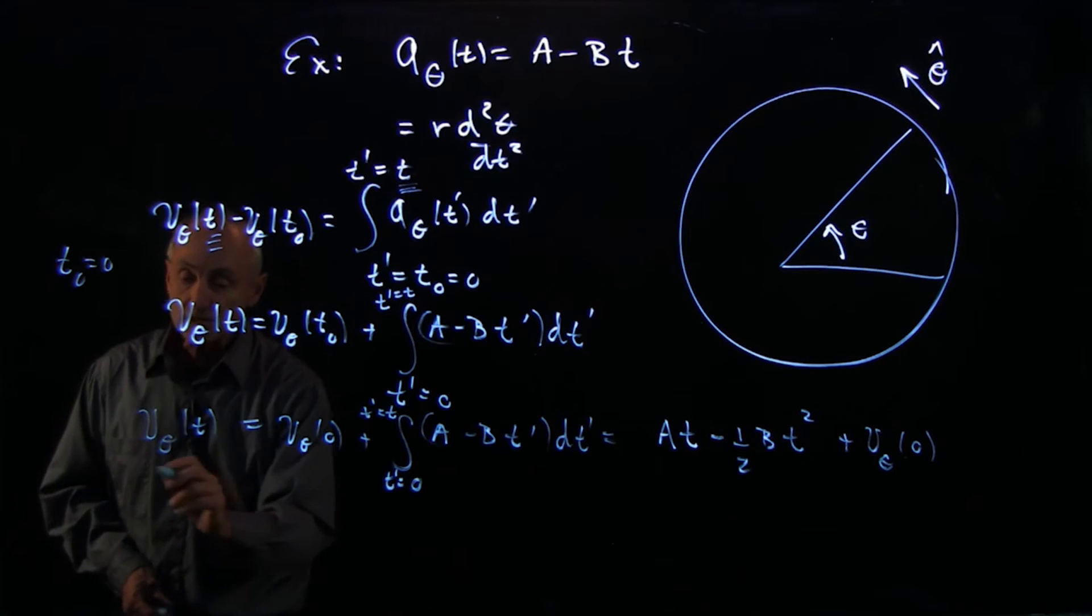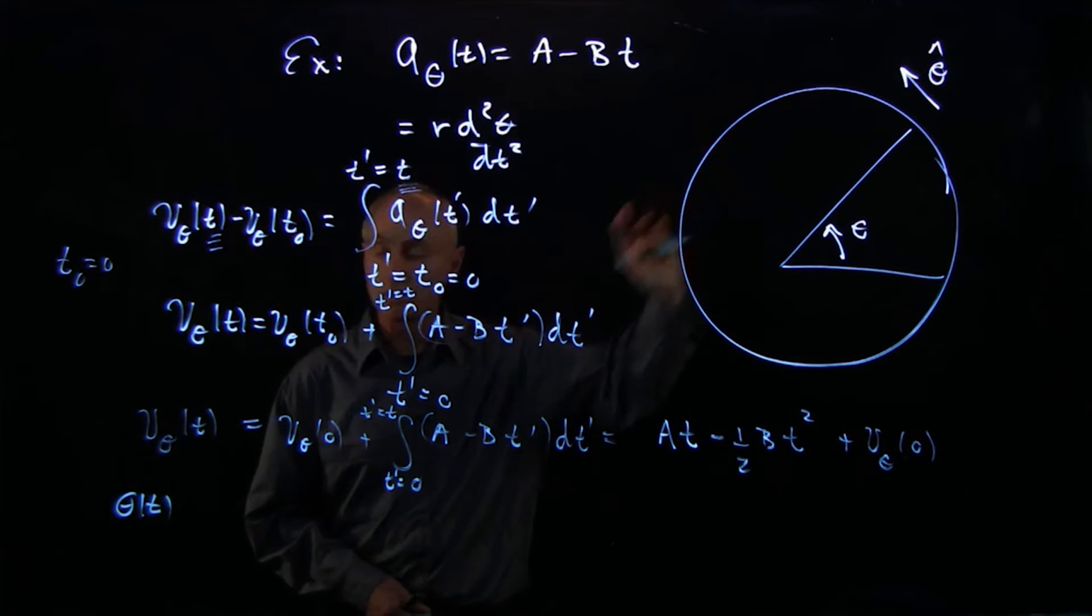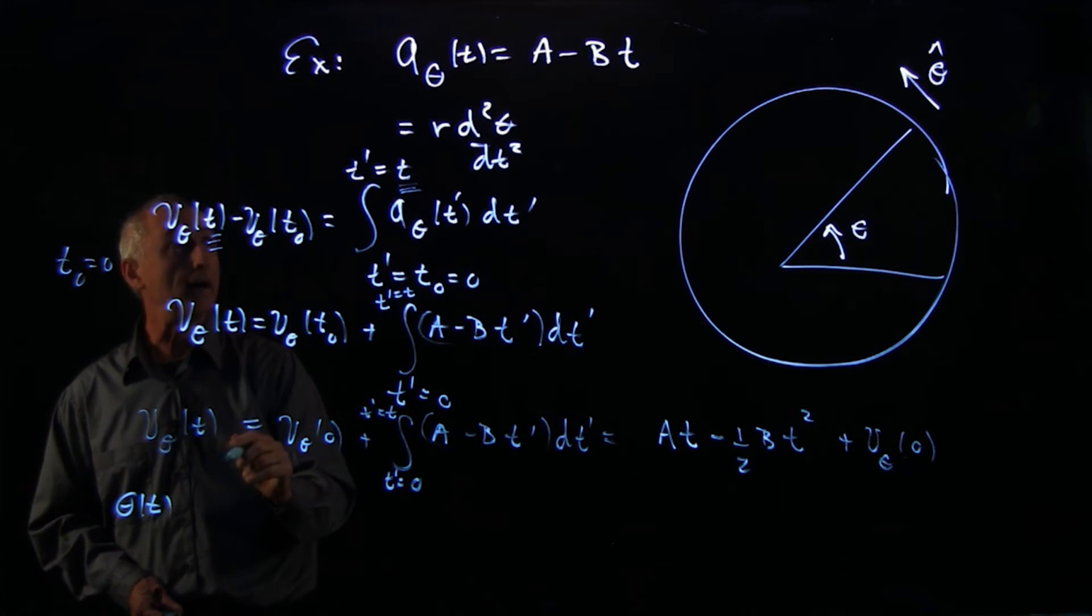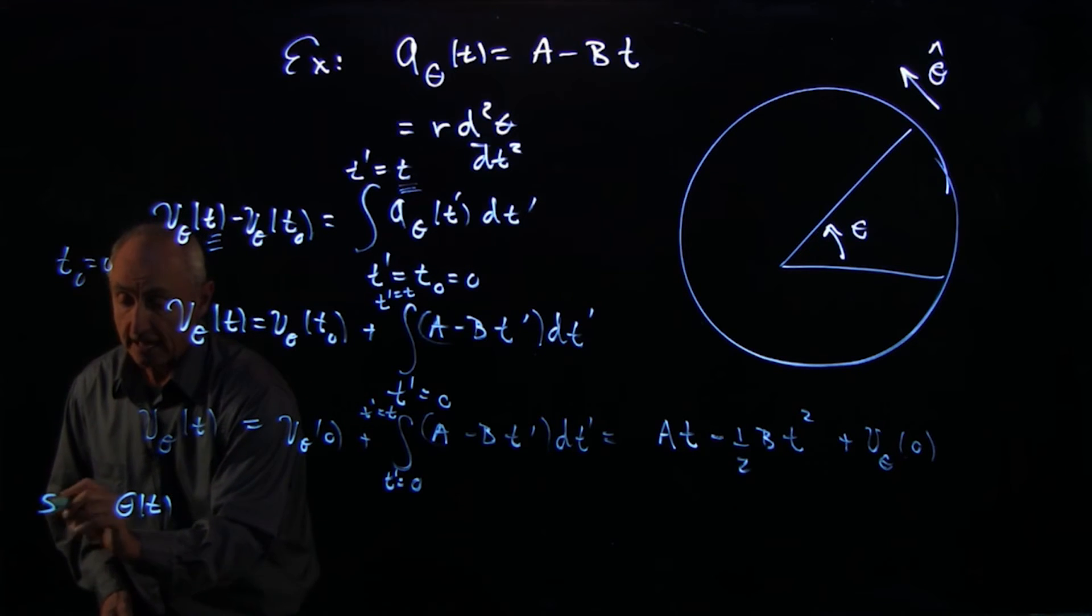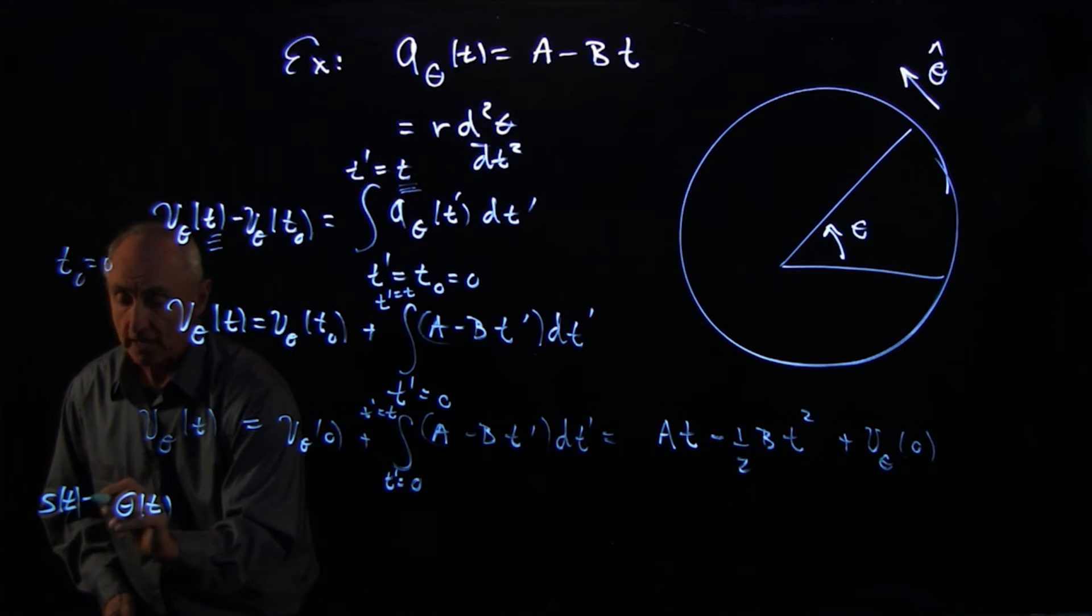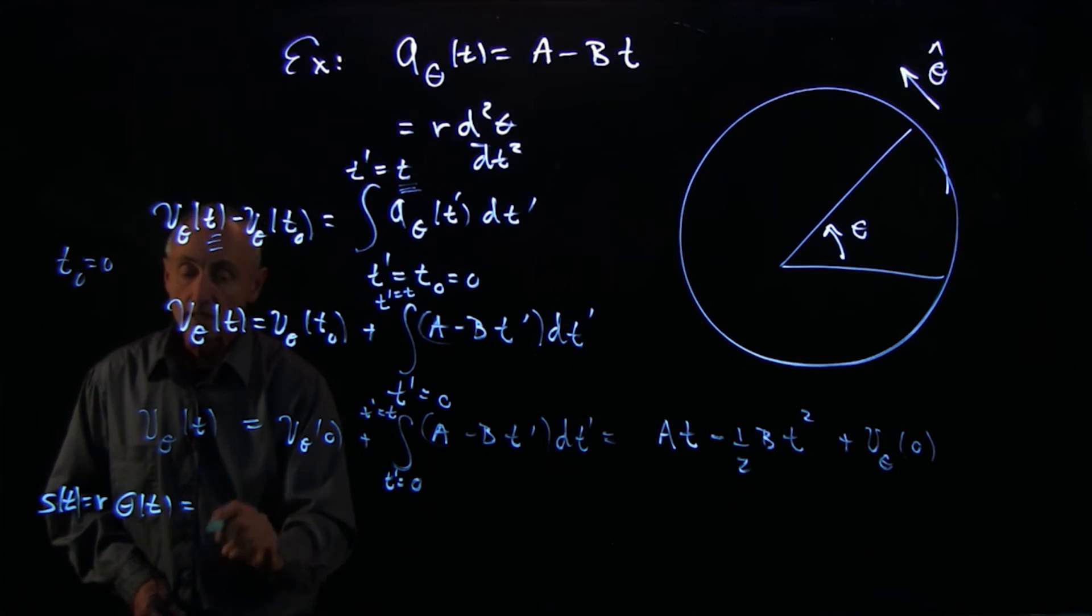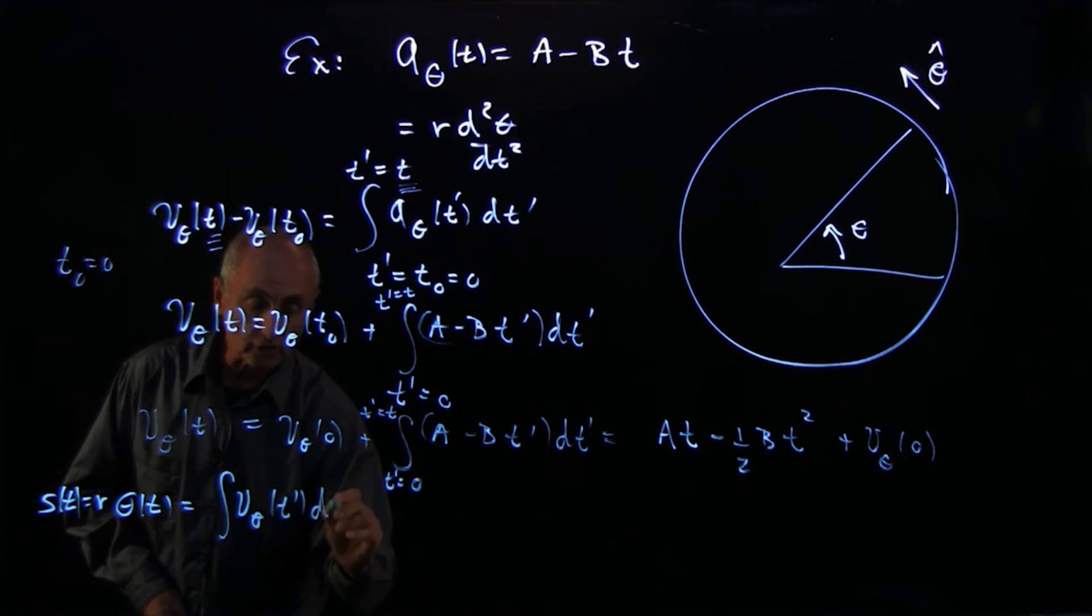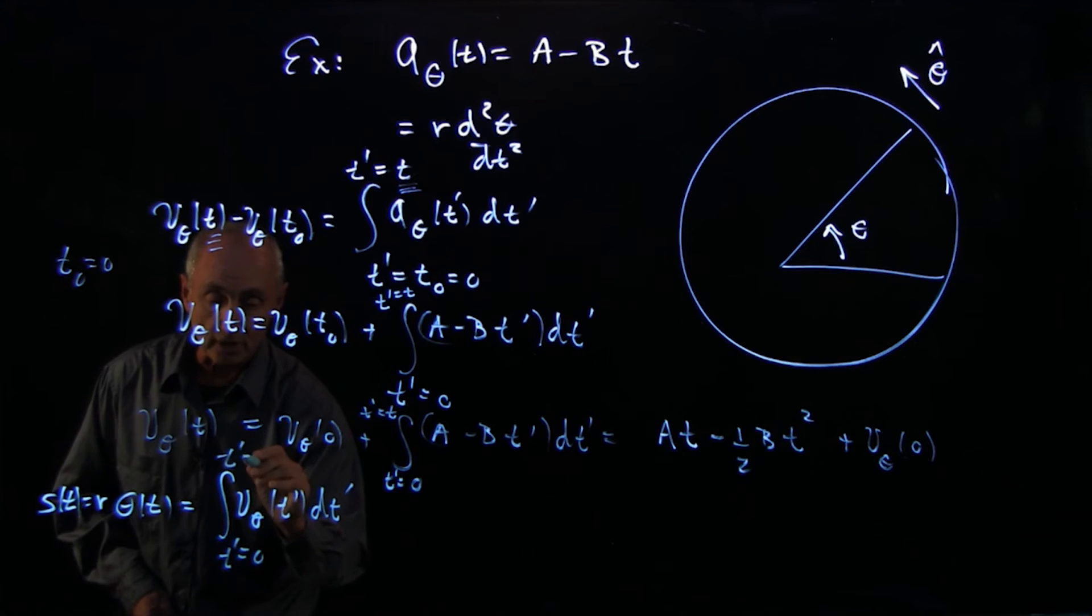In exactly the same fashion, the angle, how much angle does this go through? Well, we have to be careful there. So if we want to do the arc length, s(t), we have to multiply the angle by the radius. And that is just the integral of the tangential component of the velocity from t' equals 0 to time t' = t.